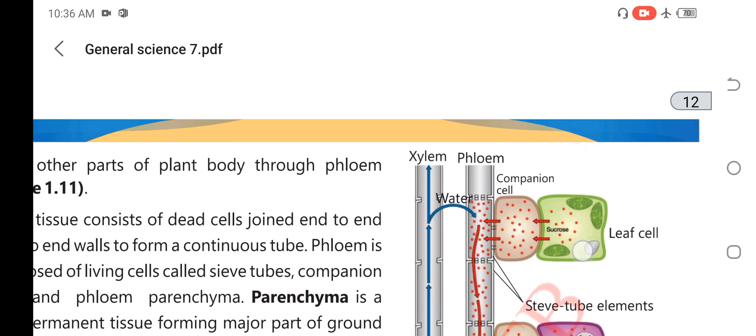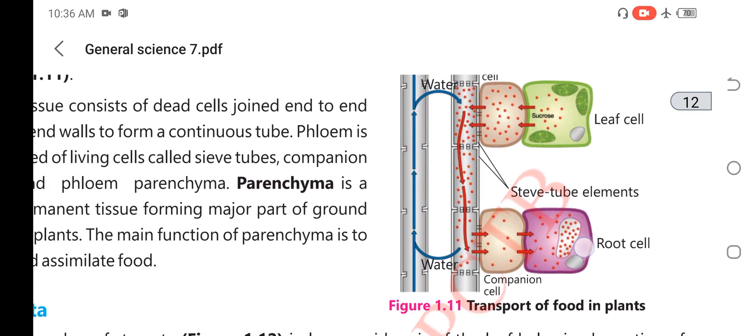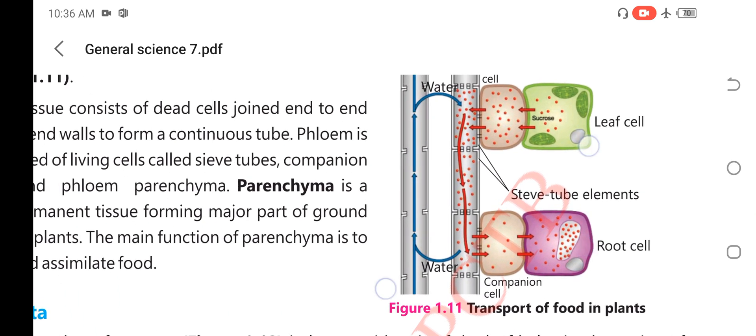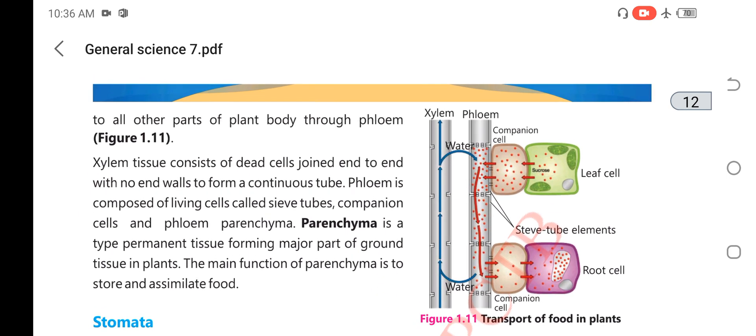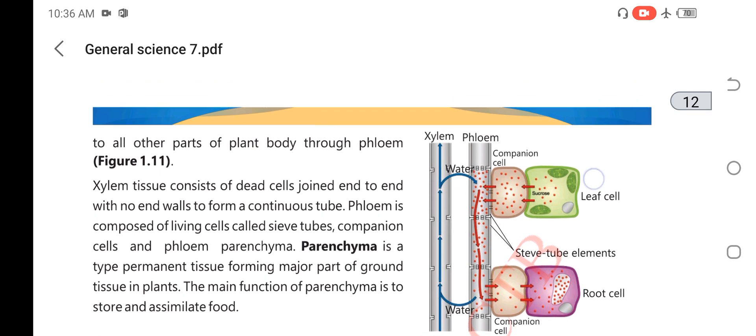If we talk about conduction of food in plants, or transport of food in plants, we know that phloem tissues consist of companion cells and sieve tube elements. All these structures are helpful in transport of food material to all parts of the body.